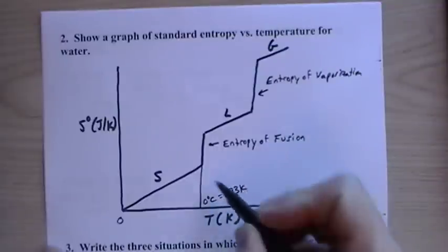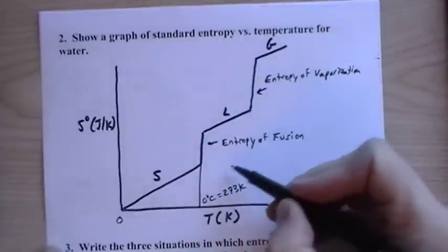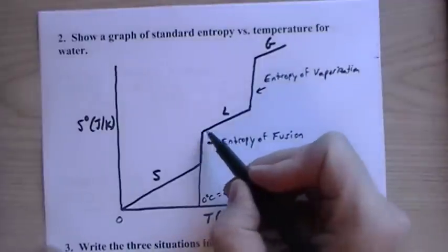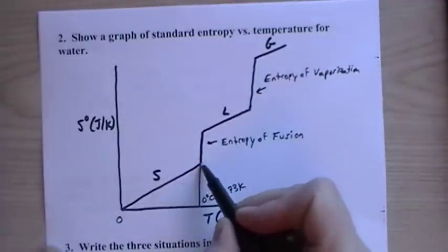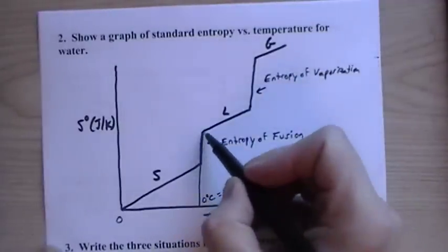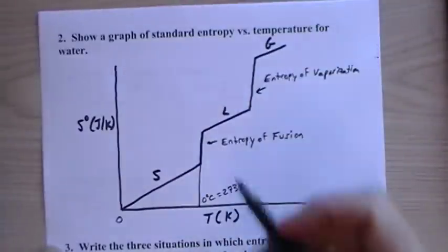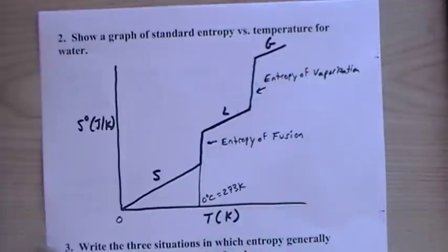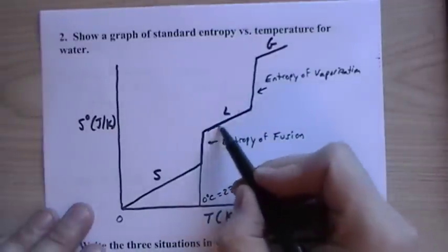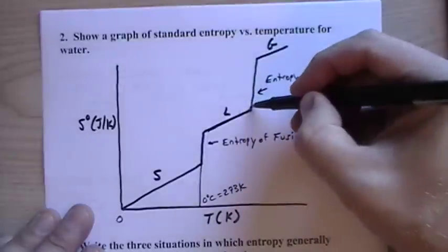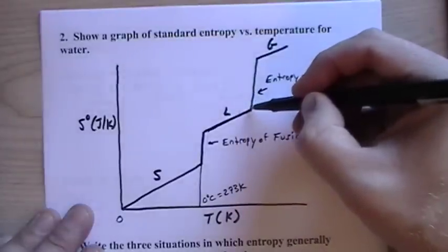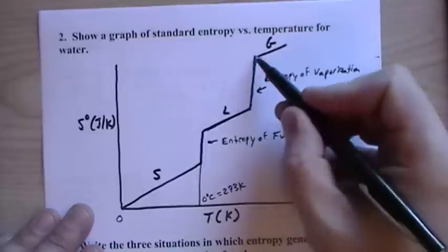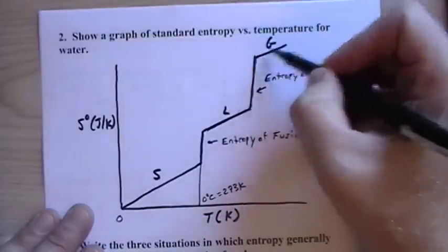At 273 Kelvin (zero degrees Celsius) we go from solid to liquid — this gives a sudden jump called the entropy of fusion. As the liquid heats up, molecules move faster and entropy increases. Then at 373 Kelvin (100°C) there's a larger jump — the entropy of vaporization — as water becomes a gas.